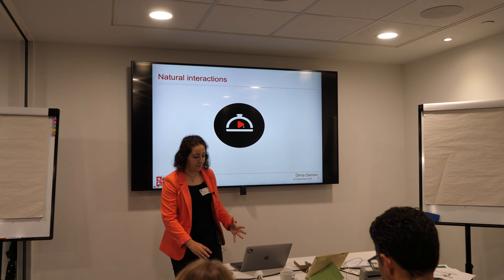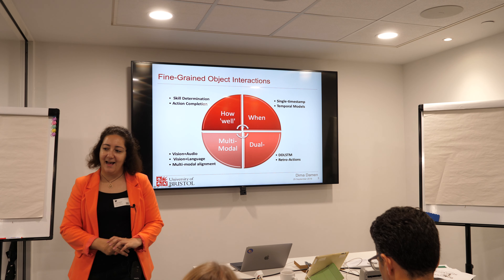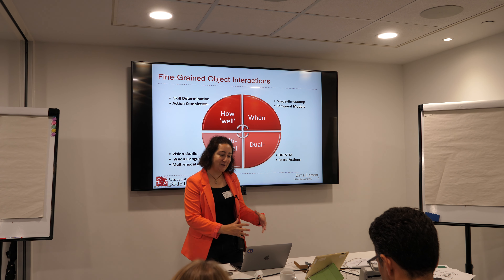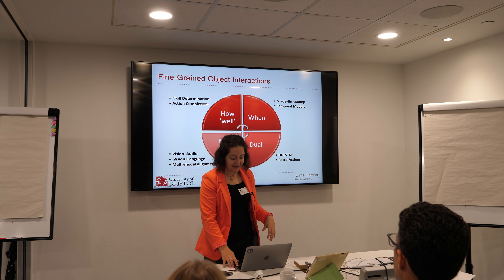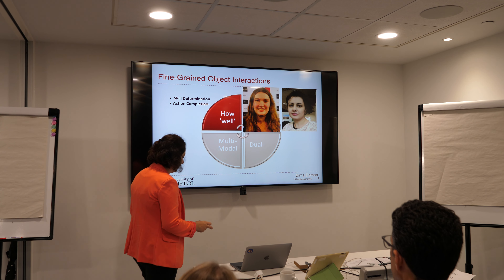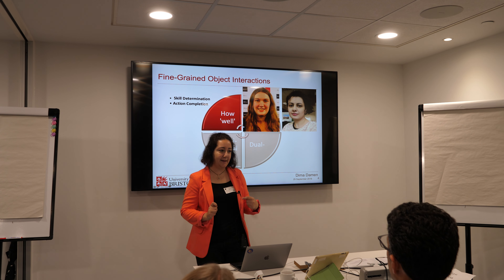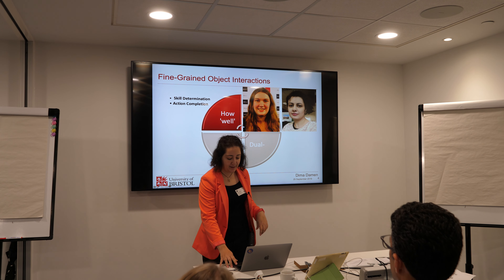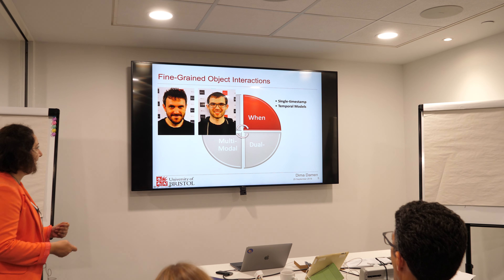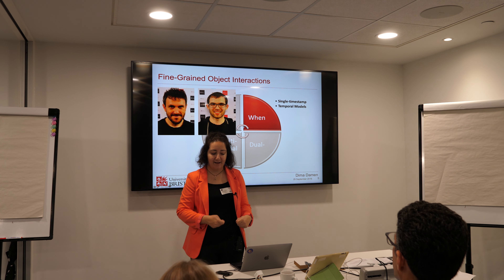The effort to collect natural interactions gave rise to lots of interesting fine-grained problems. We've been working on skill determination and action completion — Hazel and Farnoosh are here and can tell you how we look at two videos of people performing the same action and try to decide who is performing it better. Farnoosh has focused on completion: when you attempt an action but don't successfully complete it. We've also done lots of work on when actions take place, whether time matters, and Davide can tell you more about learning from single timestamps. Will can take you through all the temporal models we tried on EPIC and whether they make an impact.